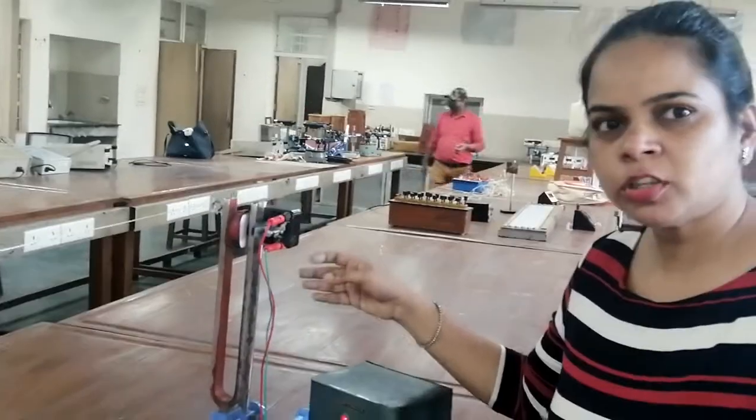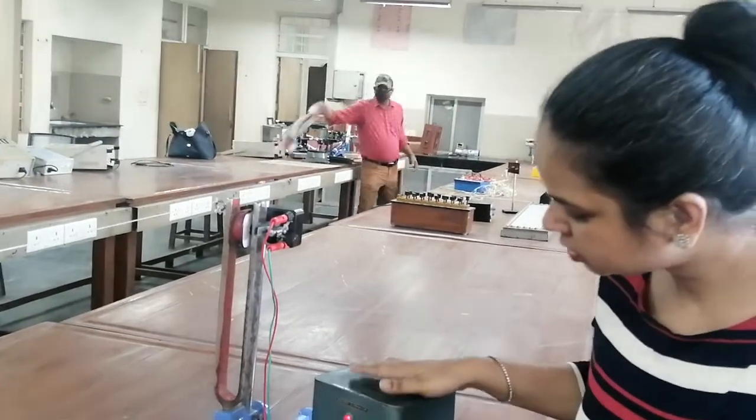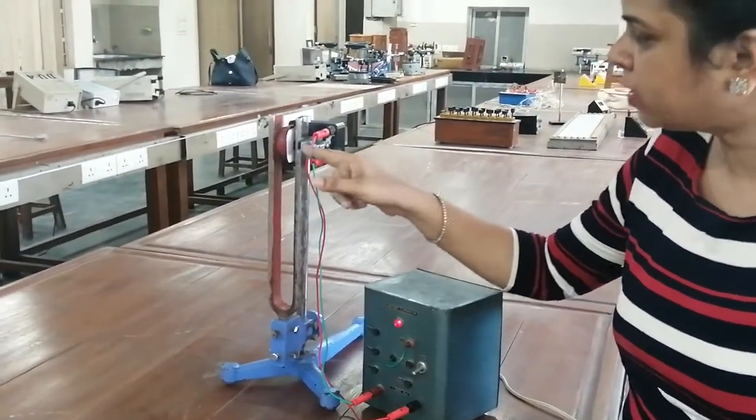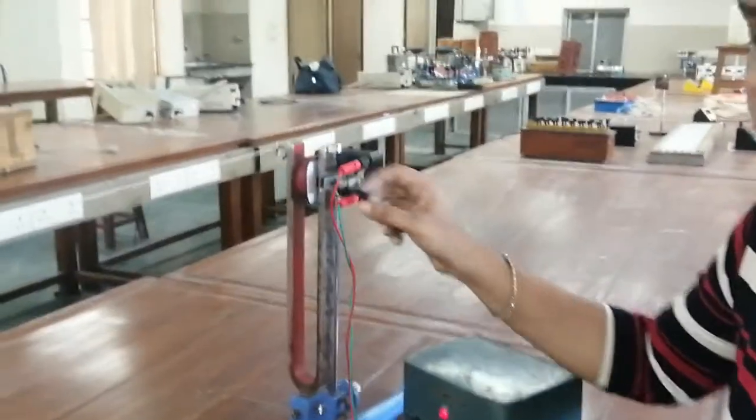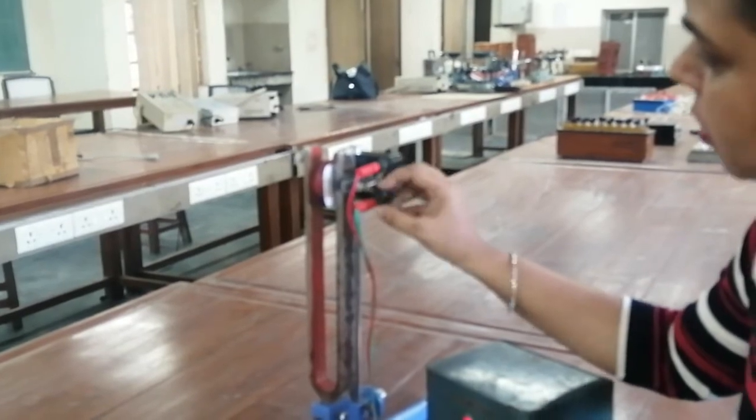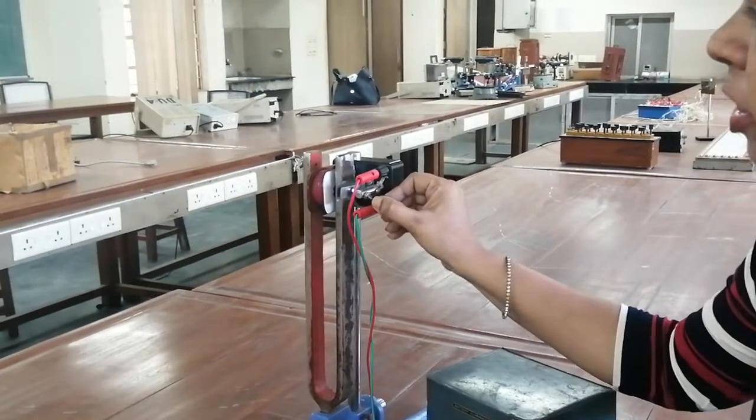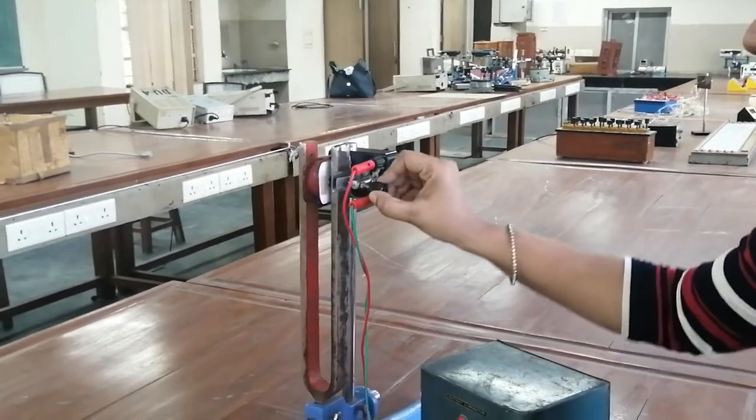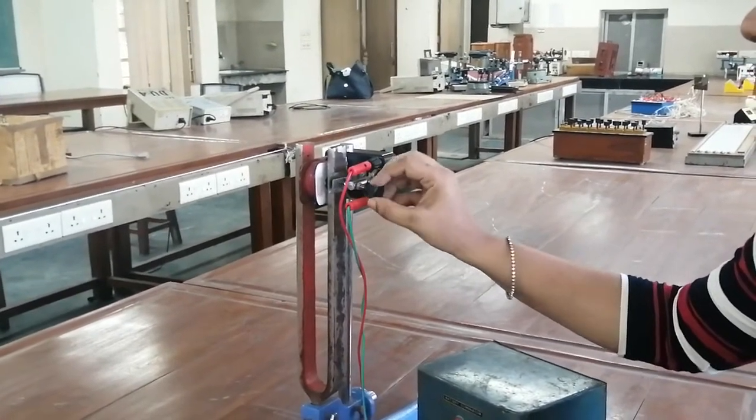This is our experimental apparatus for the transverse arrangement. This is our battery eliminator. This is the electromagnet. And this is the screw. And here is the metal strip attached to the tuning fork. When I touch this, vibration will be produced in the thread.